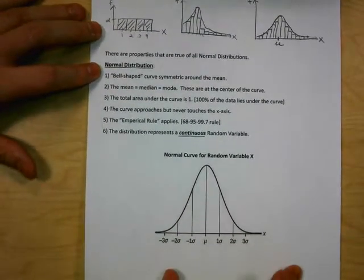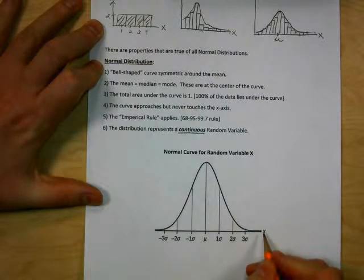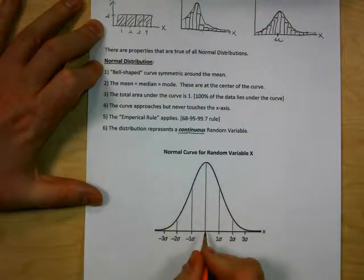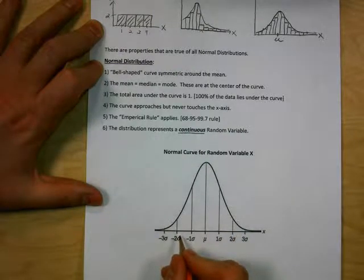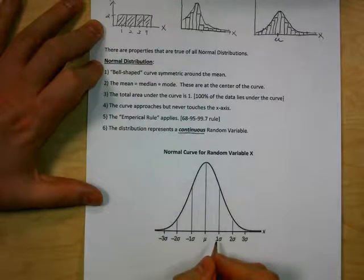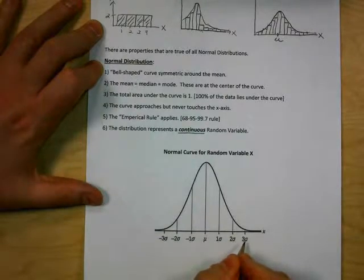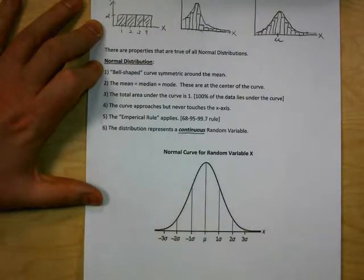On a normal curve for random variable X, we have X labeled on the axis. The mean is in the center of the curve, and then you can count 1, 2, and 3 sigma — standard deviations — above the mean and below the mean. So the mean is right in the center, and we can count one standard deviation above the mean, two standard deviations above the mean, three standard deviations above the mean, and also below the mean.